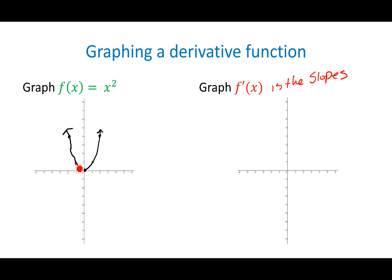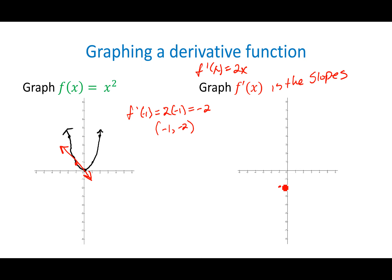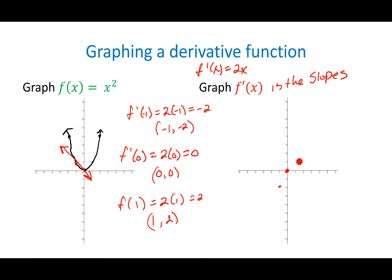So if I choose the point at negative 1 — we already know F prime of X is 2X — F prime of negative 1 is 2 times negative 1, which is negative 2. So I have a coordinate of negative 1, negative 2, and I put that as a point on my F prime of X graph. At 0, F prime of 0 is 2 times 0, so I get 0 — coordinate 0,0. At 1, I'd have 2 times 1 which is 2, so coordinate 1,2. It starts to look like a straight line going right through the origin.